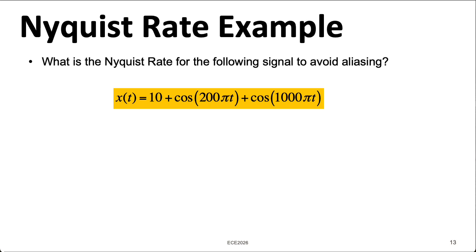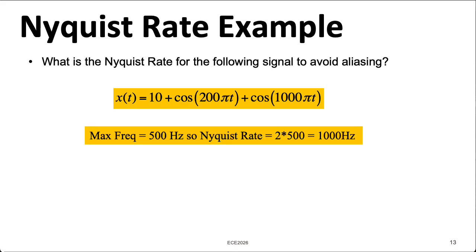So what's the Nyquist rate for this signal? The highest frequency component is a thousand π radians per second. That corresponds to 500 hertz, and twice that is a thousand hertz. So we want to sample at greater than a thousand hertz to avoid aliasing.